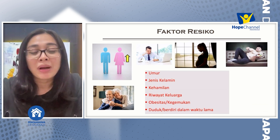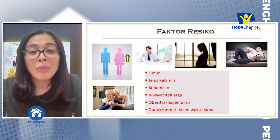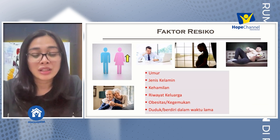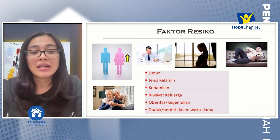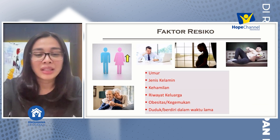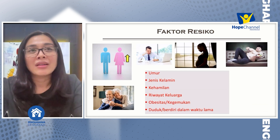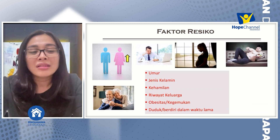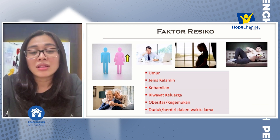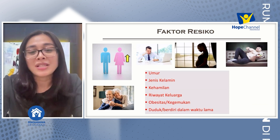Kenapa kehamilan bisa menyebabkan varises? Karena biasanya pada ibu hamil saat perut mulai membesar, ada beberapa pembuluh darah yang nantinya akan tertekan, sehingga prinsipnya sama dengan hipertensi. Pembuluh darah tertekan sehingga tidak bisa menyalurkan darahnya ke seluruh tubuh dengan baik. Kemudian adanya riwayat keluarga yang menyangkut hipertensi. Kemudian obesitas dan kegemukan, yang biasanya dibarengi dengan penyakit-penyakit lain, sehingga dapat meningkatkan faktor risiko varises.